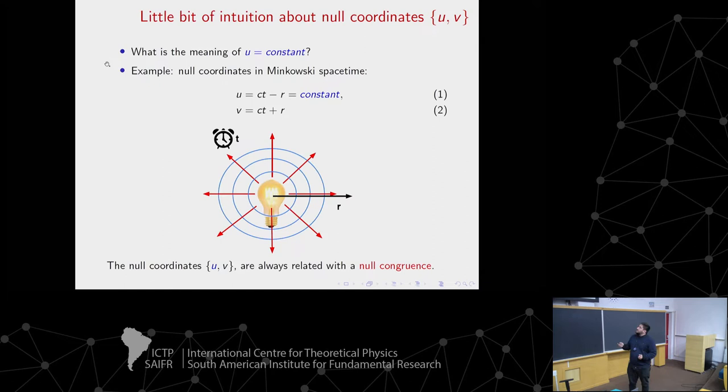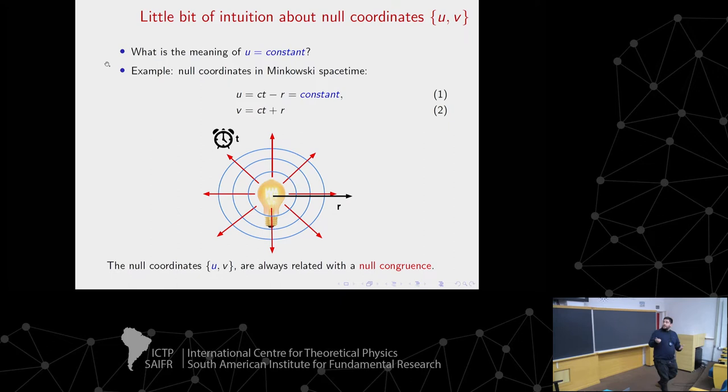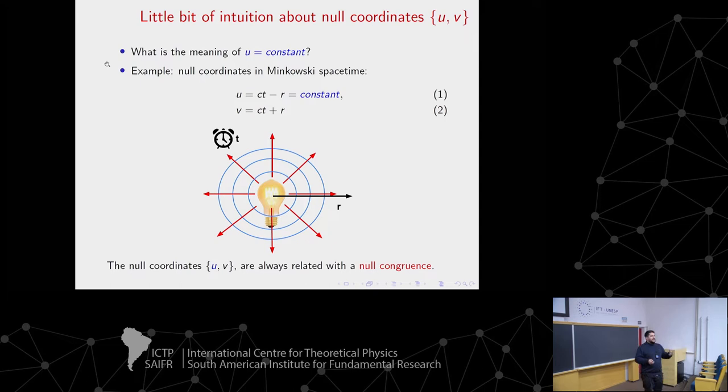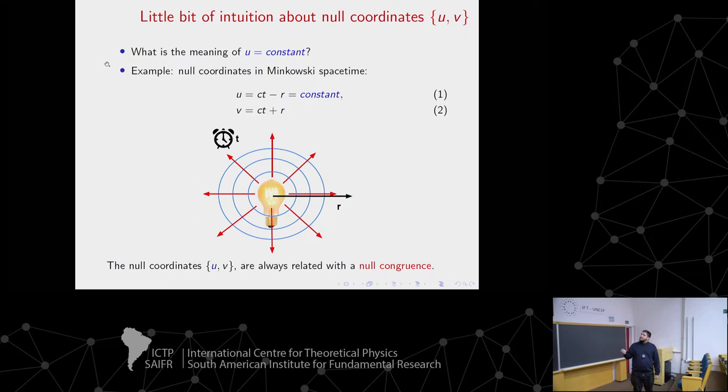I'm going to start with this question. Suppose that we have null coordinates in certain spacetime - usually the outgoing and ingoing null coordinates. What is the meaning of that a null coordinate, for example the outgoing null coordinate U, has a certain value - U equal to constant, some constant value. To understand this we can start with the most simple example, which is Minkowski spacetime, where the null coordinates are very well known.